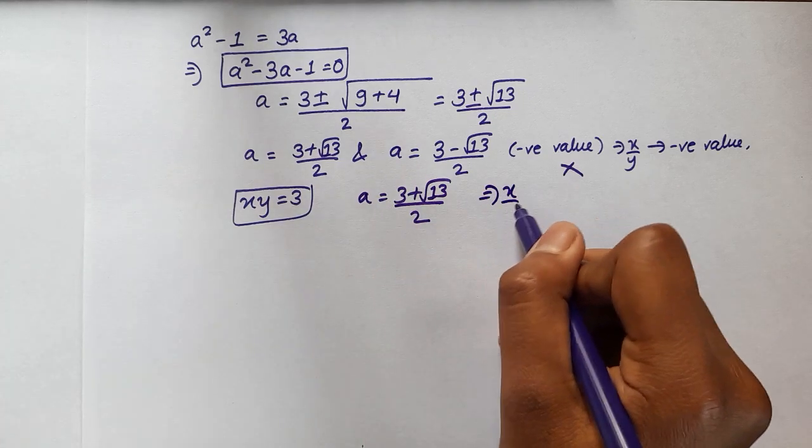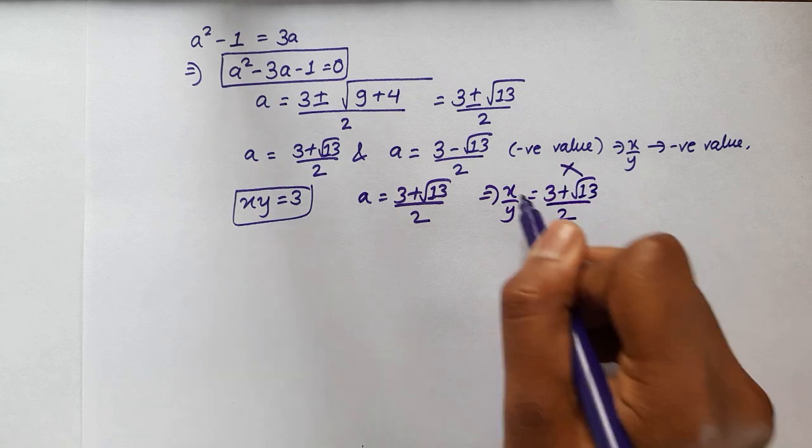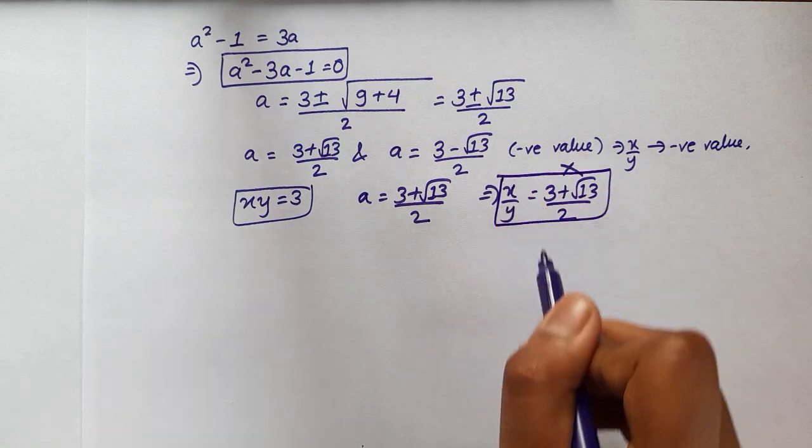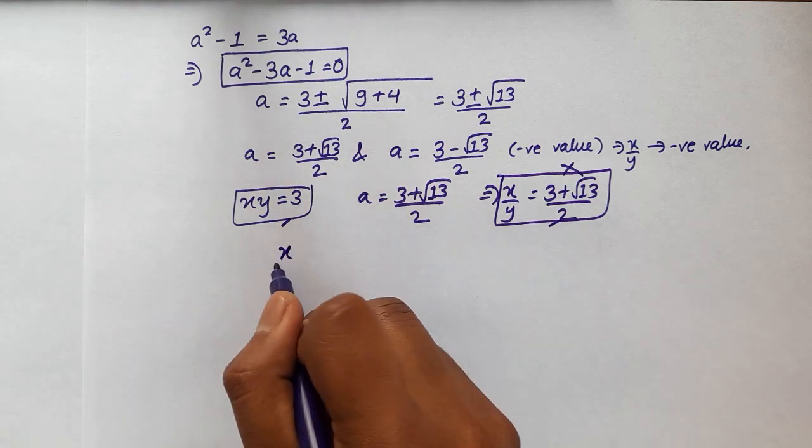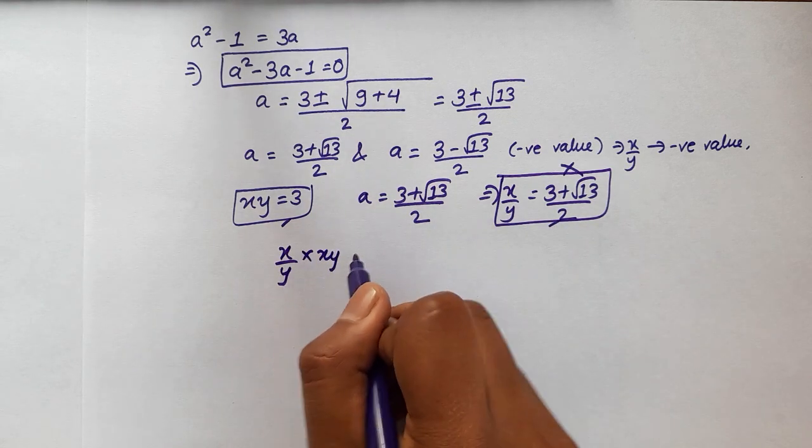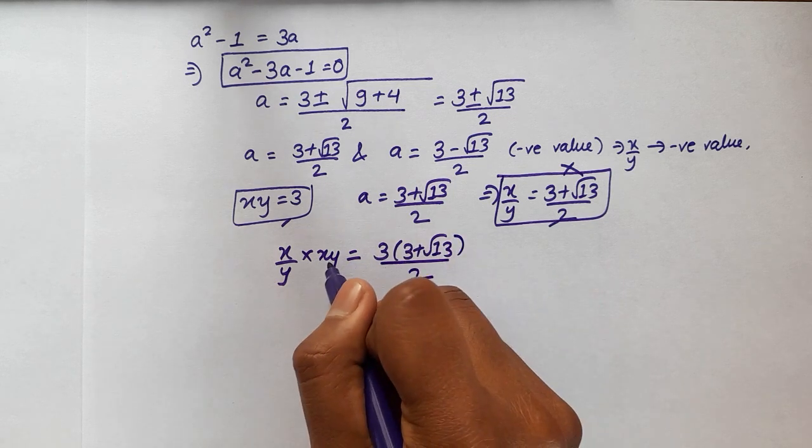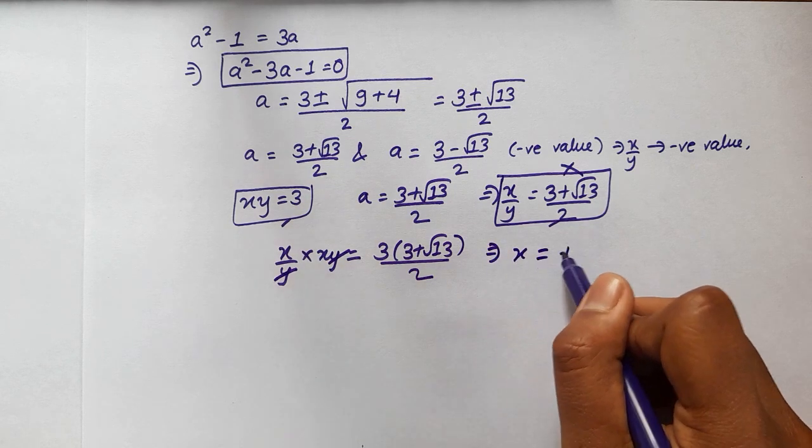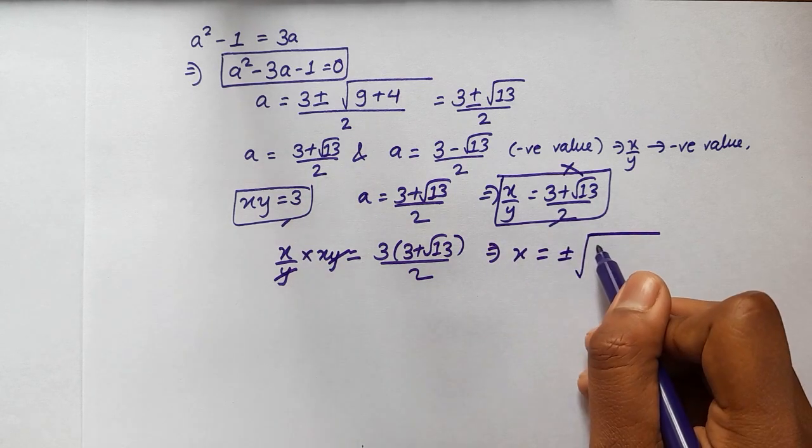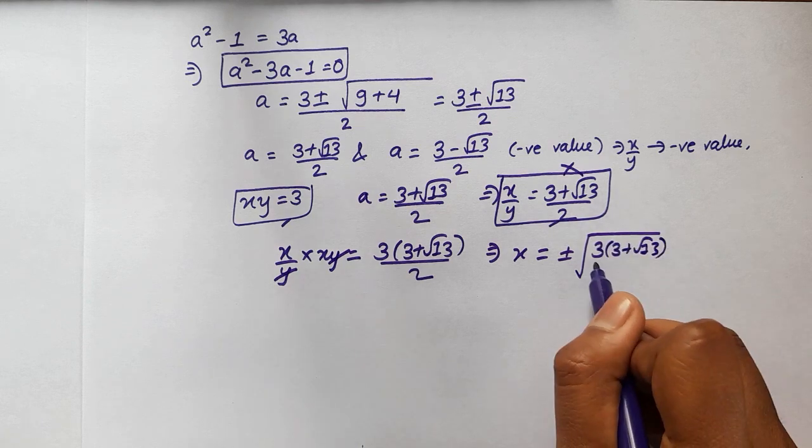Now this is the same as x over y equal to 3 plus root 13 over 2. So now we have got two equations. So if you multiply the two equations we will have x over y multiplied by xy equal to 3 multiplied by 3 plus root 13 over 2. Cancel out the y. Then we will have x is equal to plus minus under root 3 multiplied by 3 plus root 13 all over 2.